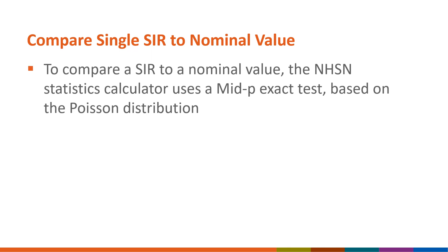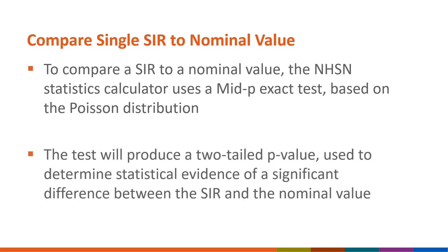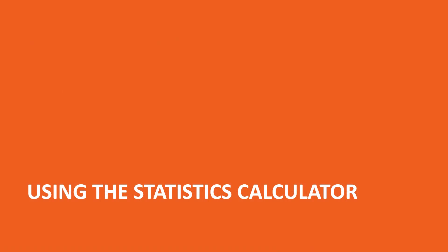To perform the comparison of a single SIR to a nominal value, the NHSN Statistics Calculator uses a mid-P exact test, based on the Poisson distribution. This test will produce a two-tailed p-value, which can be used to determine if there is statistical evidence of a significant difference between the SIR and the nominal value. Let's walk through an example of how to use the Compare Single SIR to Nominal Value option of the Statistics Calculator.